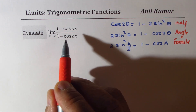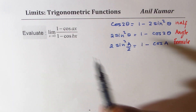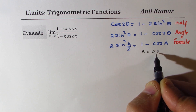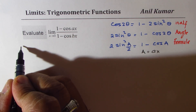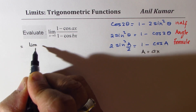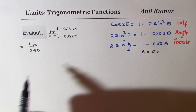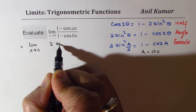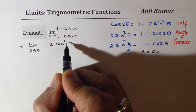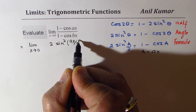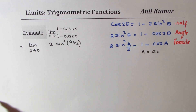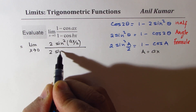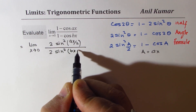If you compare, then capital A in our case is ax. So we could actually rewrite the limit as: limit x approaches 0 for the numerator, which now becomes 2 sine square ax by 2, divided by 2 sine square bx by 2. That's half of the angle.